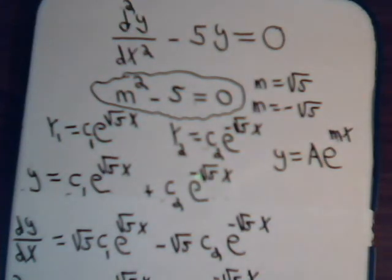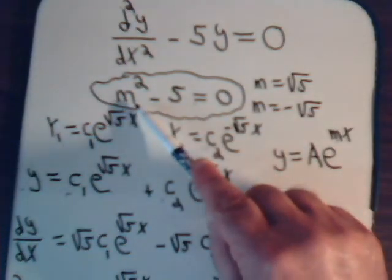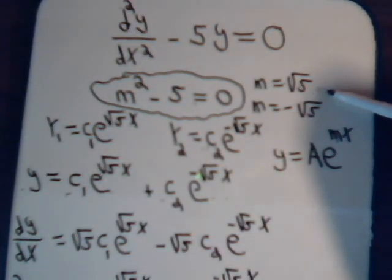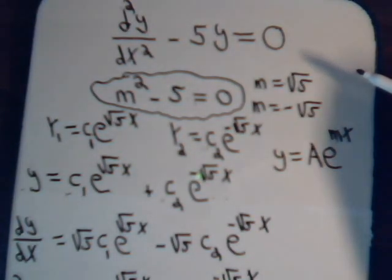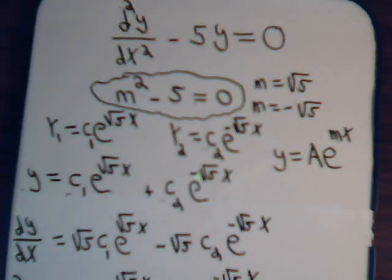So far, for our auxiliary equation, we have had examples where the roots are distinct — they're different. What happens if we encounter a situation where the auxiliary equation has repeated roots? How does that affect the solution? That is what we'll examine in the next video.